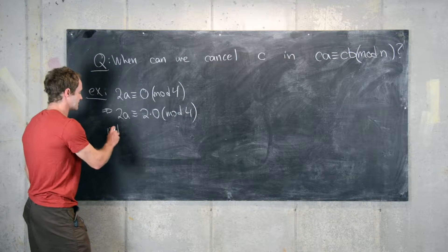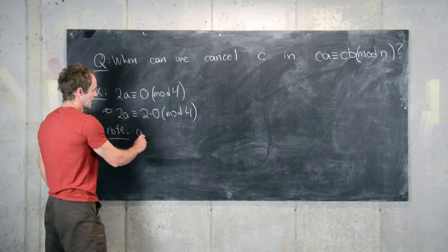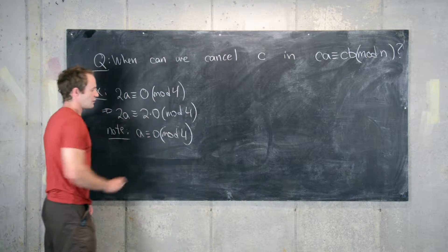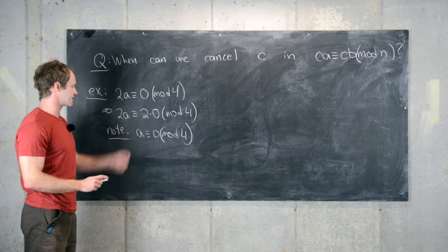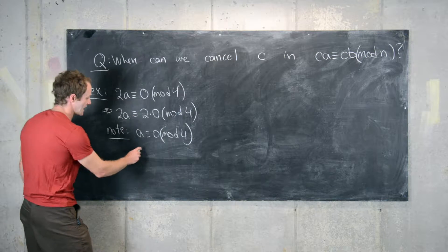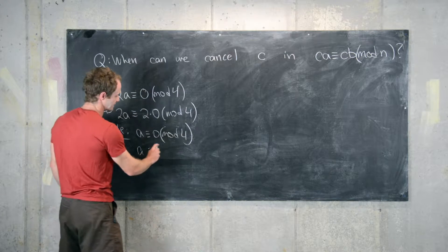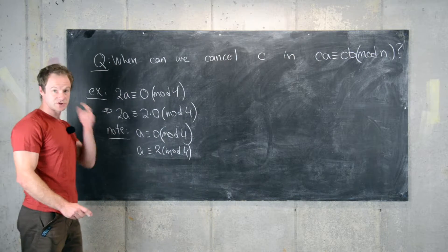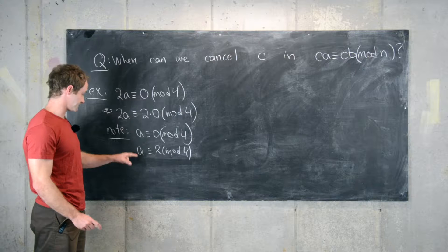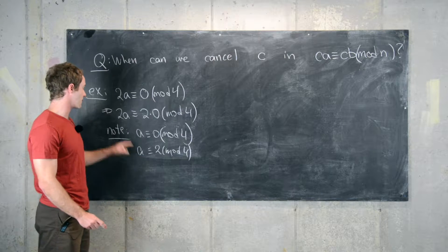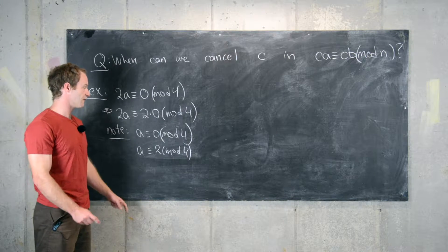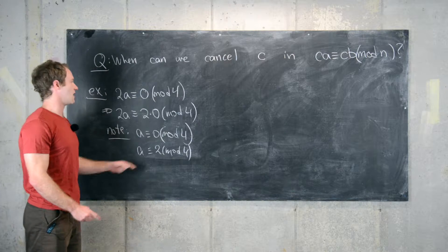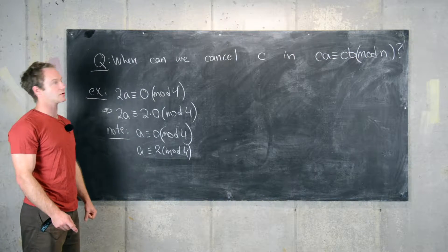So here we notice that A is congruent to 0 mod 4, which would be what we got if we cancelled the 2s, but A is also congruent to 2 mod 4. That's another possible solution, because if A is congruent to 2 mod 4, then 2 times A is congruent to 4 mod 4, which is 0 mod 4 — also a solution to this modular equivalence.